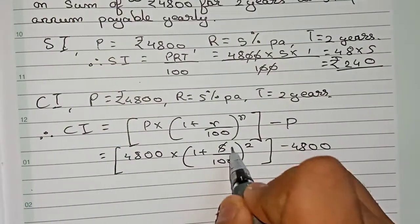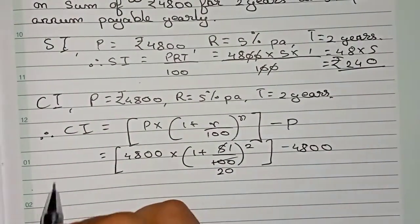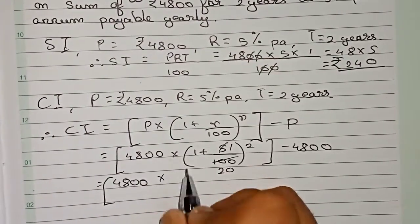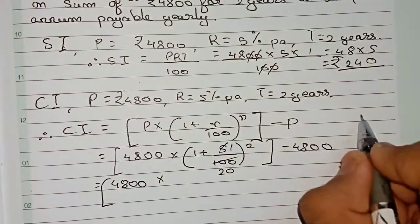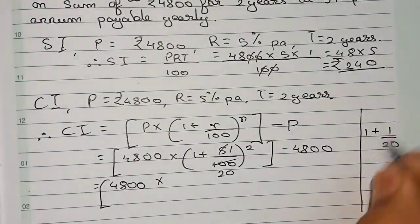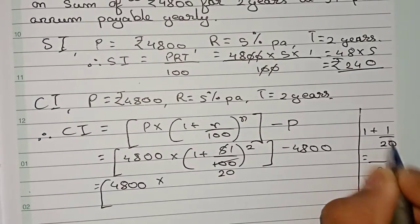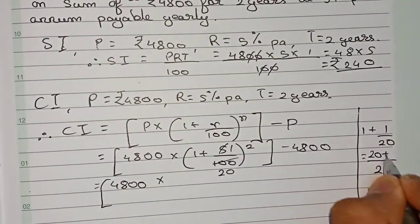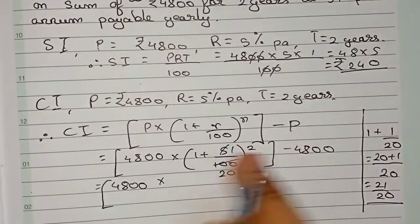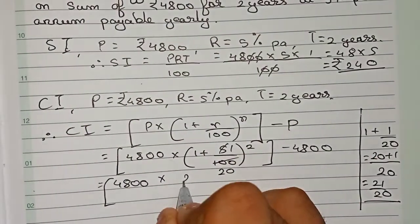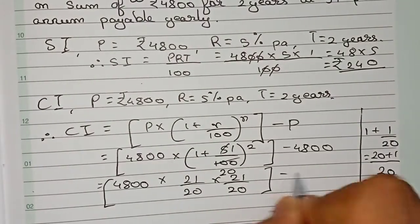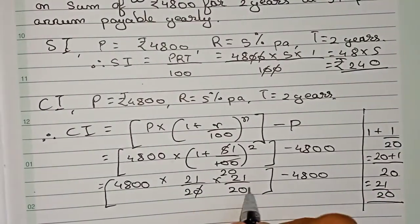Simplifying five by hundred, cut five and hundred — it becomes one by twenty. So the expression becomes four thousand eight hundred into one plus one by twenty, all to the power two, minus four thousand eight hundred. Taking twenty as LCM: twenty plus one gives twenty-one by twenty, so we get twenty-one by twenty to the power two.